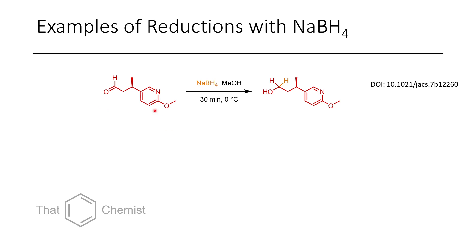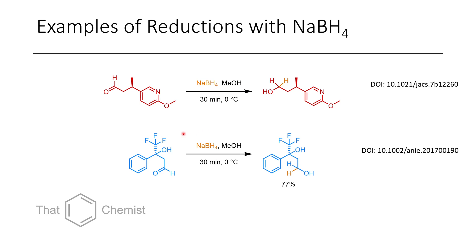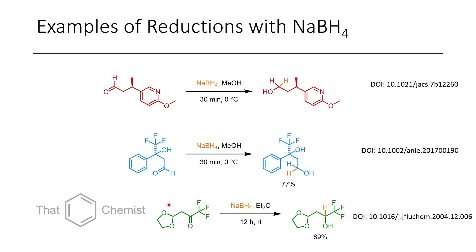Some examples include the reduction of an aldehyde-containing pyridine, affording a primary alcohol in methanol in 30 minutes at zero degrees. Another example is a chiral trifluoromethyl-substituted aldehyde reduced at the primary alcohol position. A final example features an acetal-protected aldehyde where only the ketone undergoes reduction by sodium borohydride — a good example of why you might use an acetal to protect an aldehyde and prevent it from being reduced when you want to reduce another functional group.